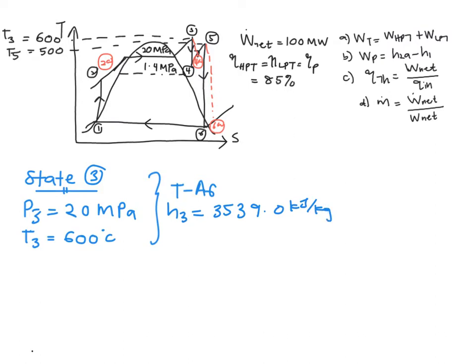And you will need your S3 because you are going to solve for 4S. This is the isentropic part and this is the actual part. So S3 equals 6.5075 kJ per kg·kelvin.